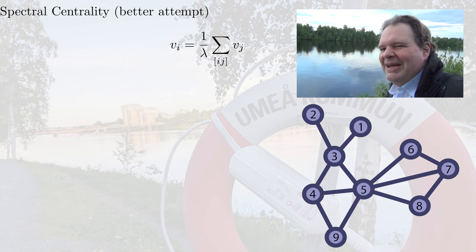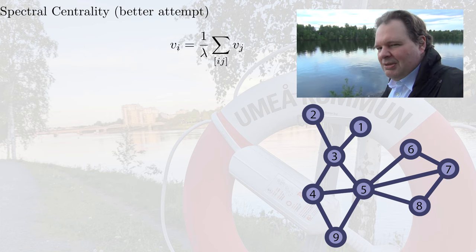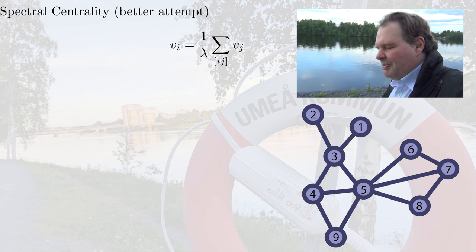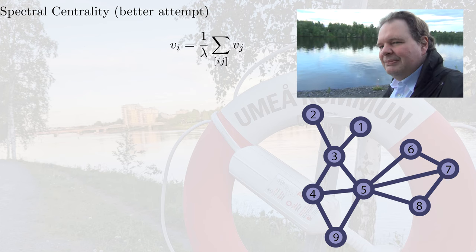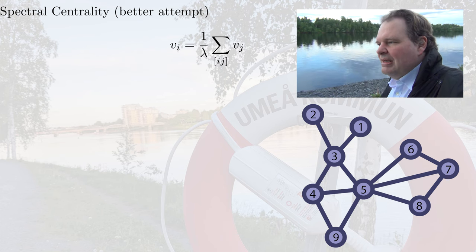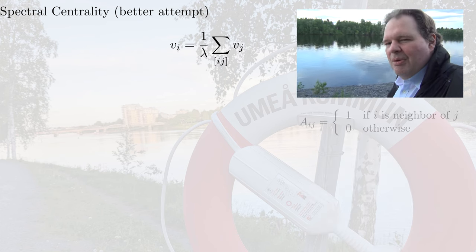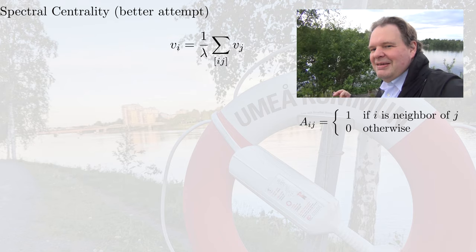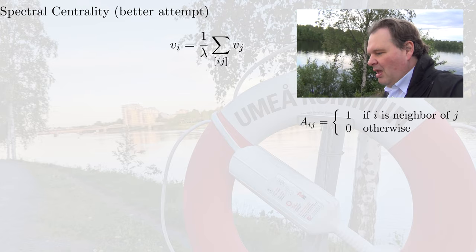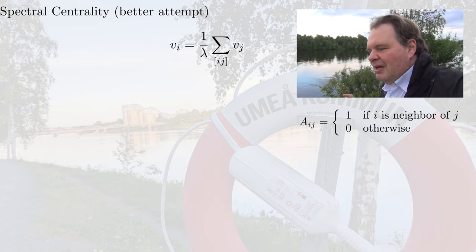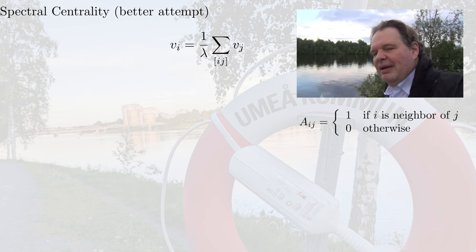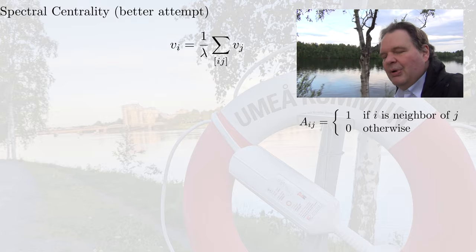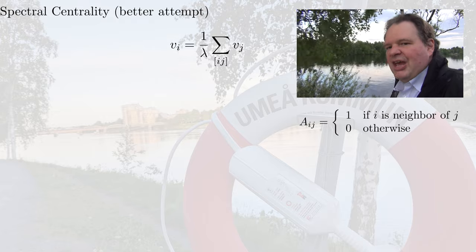But first, let's deal with the ugly sum. Because the sum over neighbors, this is not a nice mathematical object. So what can we do about this? Well, here's a trick. And this trick is, we can use the adjacency matrix. Remember the adjacency matrix from part one of this course? Well, this is a matrix that describes the connectivity of a network. So we define A as a matrix such that Aij is 1 if nodes i and j are connected. And Aij is 0 if nodes i and j are not connected.